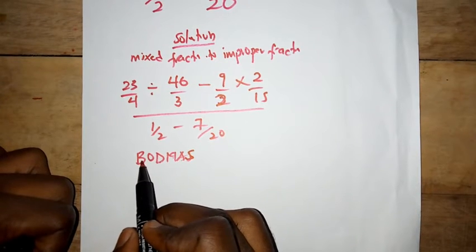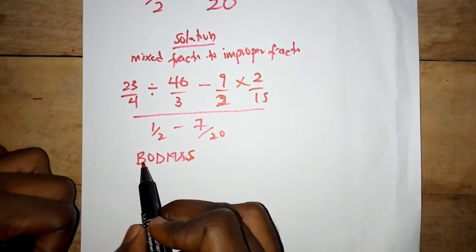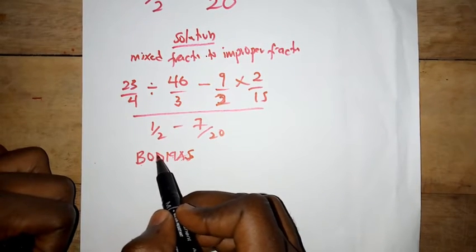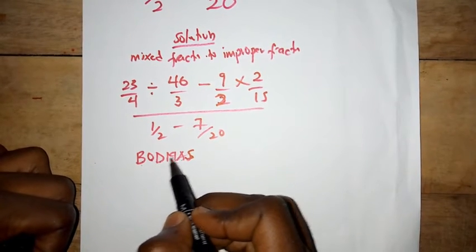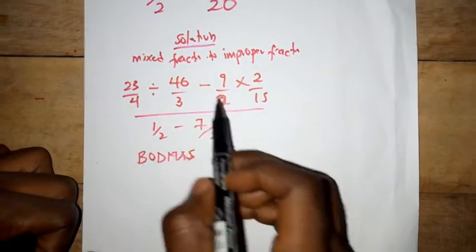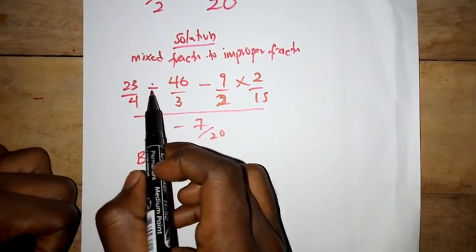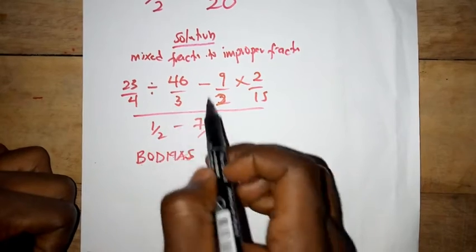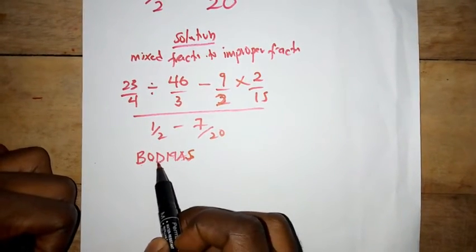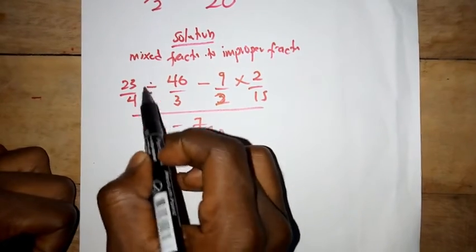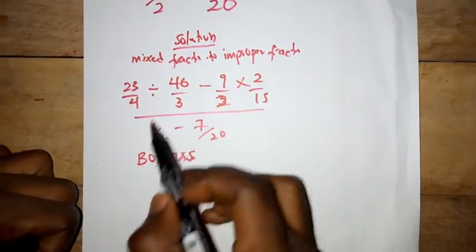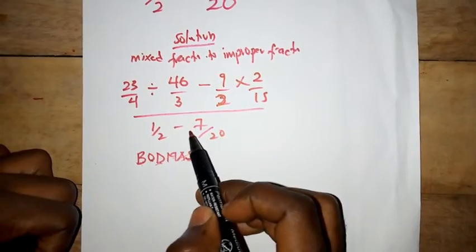We have to do the one with brackets first, then 'of', then division, then multiplication, addition, and subtraction. Looking at this equation, there is no bracket here, so we go to 'of' — there is no 'of' either. Next is division, so we deal with the division part.